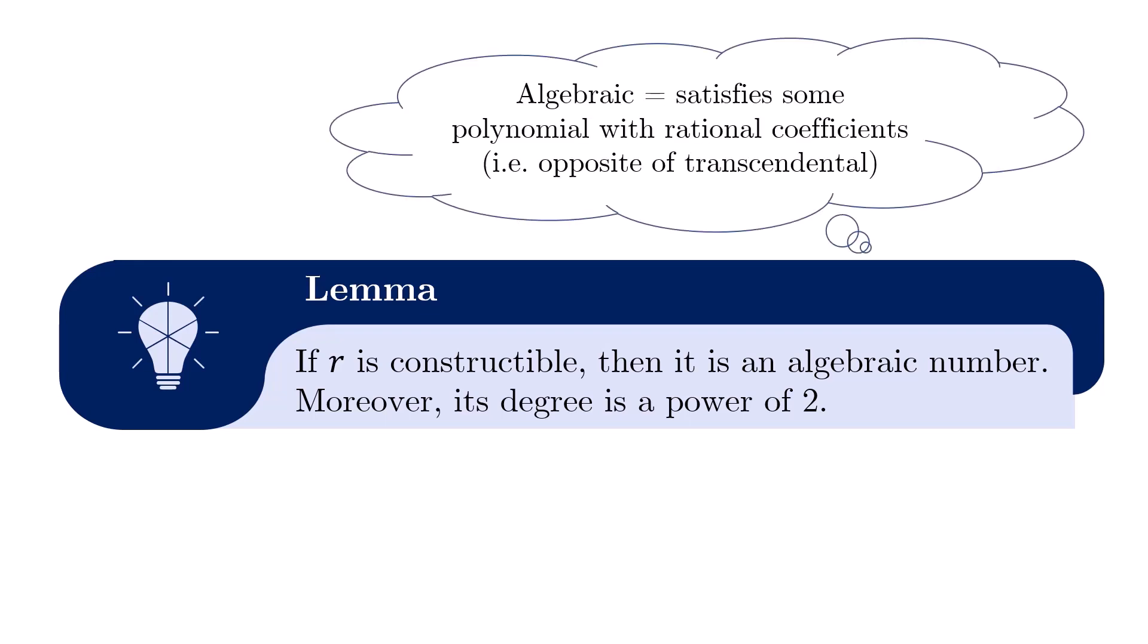Recall that algebraic means that it is the root of some polynomial with rational coefficients. You may have heard of the opposite notion, where a transcendental number is one which is not the root of any polynomial with rational coefficients. So for example, square root of 2 is algebraic, whereas pi is a famous example of a transcendental number.